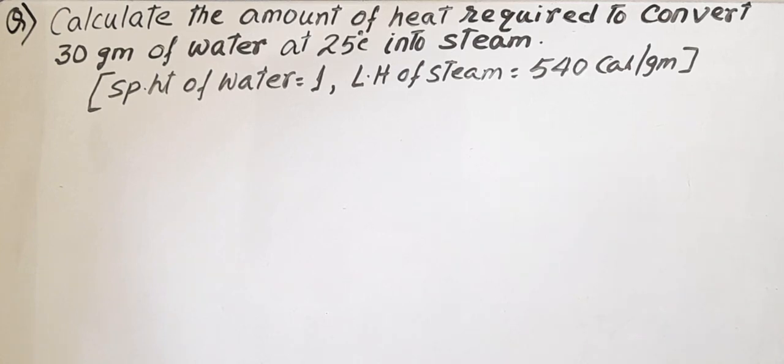Dear children, today I have given a numerical problem of physics chapter specific heat and latent heat. First you know what is specific heat. Specific heat may be defined as the amount of heat required to raise the temperature of 1 kg of substance through 1 K unit.